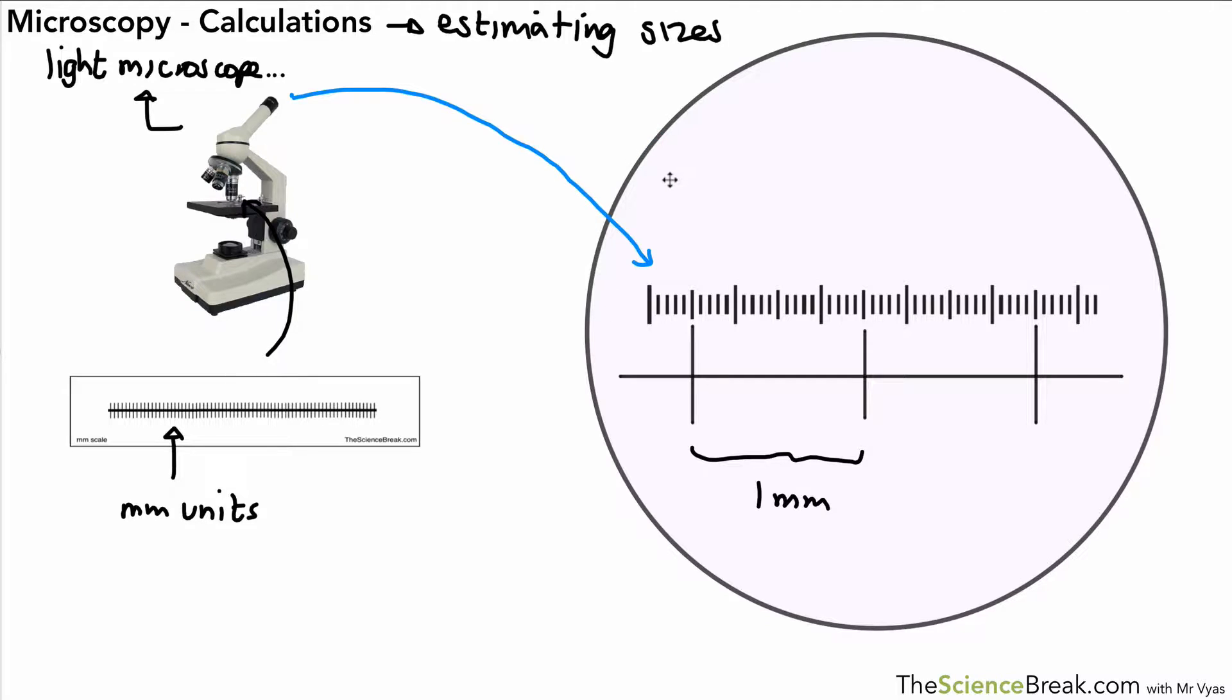In the eyepiece, we have another scale and that actually is not in any particular units, it's called arbitrary units. Not any particular scale like centimeters or millimeters or micrometers. That's found or you would put that into the eyepiece and sometimes it's known as eyepiece graticule. We can use these two together to work out the size of objects.